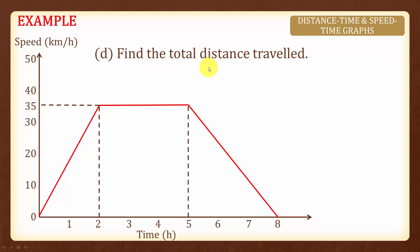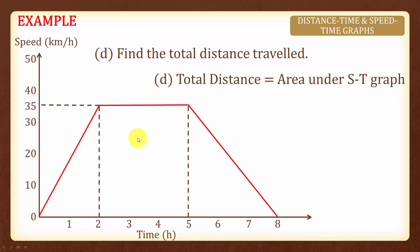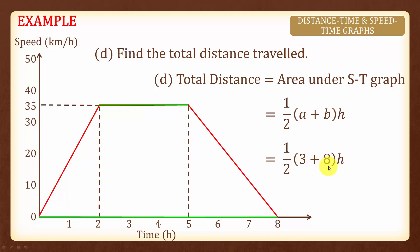Now, let us find the total distance traveled. Total distance is actually the area under the speed time graph, and all we need to do is to find the area here, which is the area of the trapezium: half bracket a plus b times the perpendicular height, where a and b are the lengths of the parallel sides. We have a here to be 3 and b here to be 8. And therefore, we have half bracket 3 plus 8 times the perpendicular height of 35. Evaluating, we will have 192.5 km.